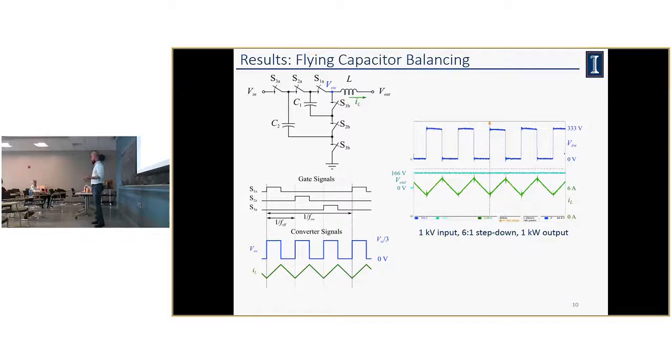Going into some results, one of the big things that always comes up with flying capacitor multilevels is balancing. In a typical waveform, looking at the switch node, you want each one of the peaks of this pulse train to be at the same amplitude. If they're at a different amplitude, it means your capacitors are not balanced. In this case, you can see this is showing the results at one kilovolt input, stepping down to a six to one step down, a kilowatt output. You can see each one of these peaks is roughly at the same level at 333 volts. So that shows very good balancing. If we weren't balanced, we would see uneven peaks.